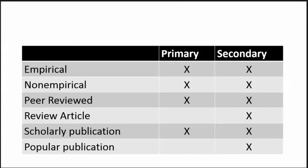Primary sources are the original presentation of a piece of knowledge. We usually talk about it in the context of history or autobiographies, but in this case we're referring to the results of research. In contrast, a secondary source relays information from other sources by interpreting or reporting on primary sources. Thinking about whether we're using a primary or secondary source helps us think about how far removed we are from the original source of information.